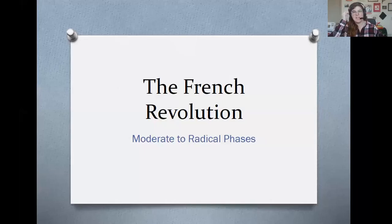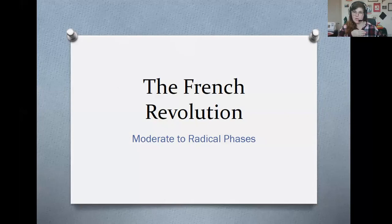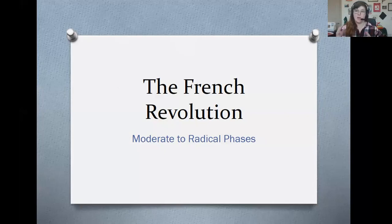Hi everyone, it's Ms. Sheehan and today I'm going to do a video on a couple of different phases of the French Revolution. I call these kind of the moderate to radical phases. This is post Tennis Court Oath, and then we go through all the way through a guy named Robespierre. This is not certainly all the revolution, just highlighting a couple of the different governments.